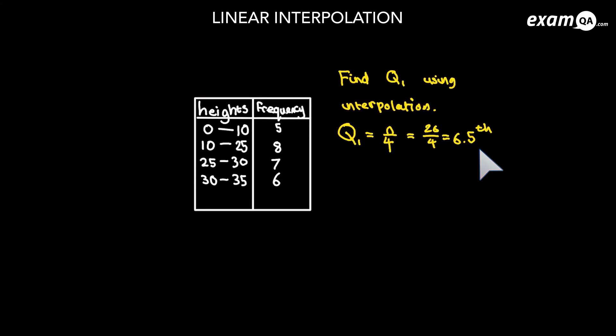Now remember, this is not the answer — if only it was that simple. This 6.5 is just telling you that you need to look up the 6.5th value, and that will be the lower quartile. So we're not there yet. The first interval is 0 to 10, and we've got 5 numbers in there, so the 6.5th number is going to be beyond that.